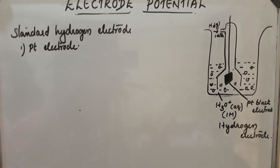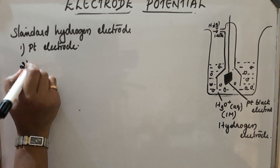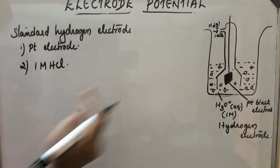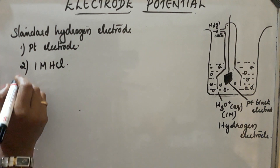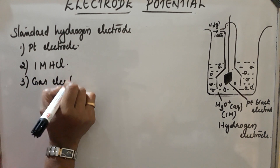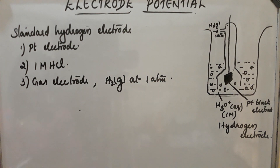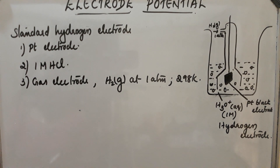The electrode is dipped into an acid solution containing H⁺ ions in one-molar concentration — specifically one-molar HCl. It is a gas electrode because pure H₂ gas at one atmospheric pressure is constantly bubbled into the solution. The temperature is kept at 298 K (standard condition).